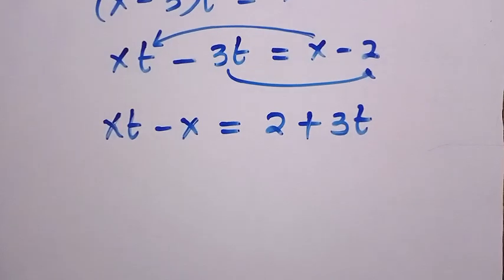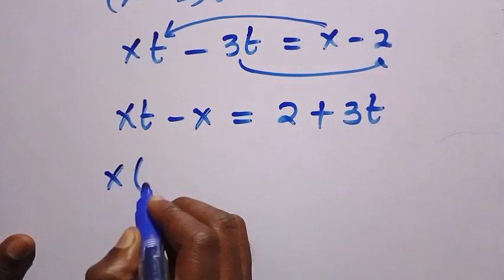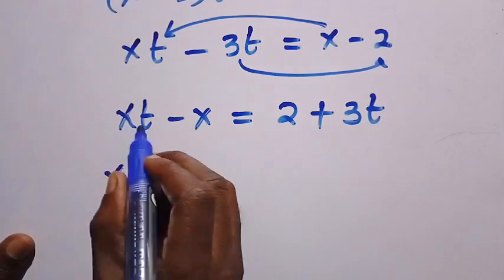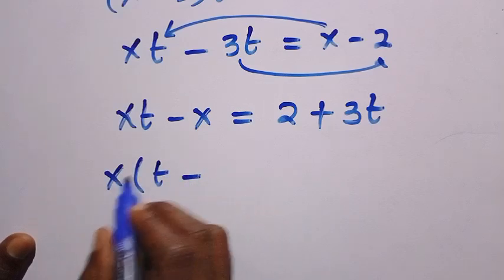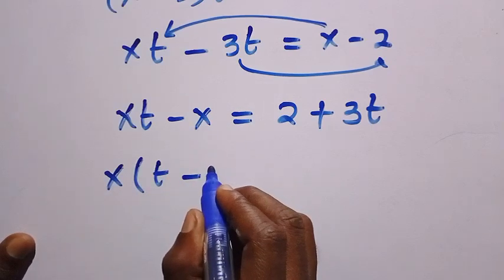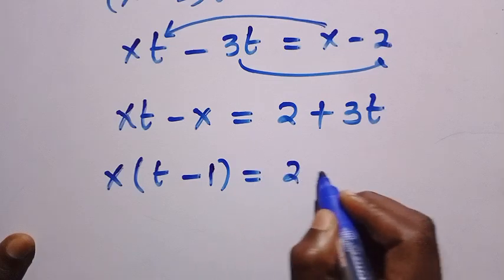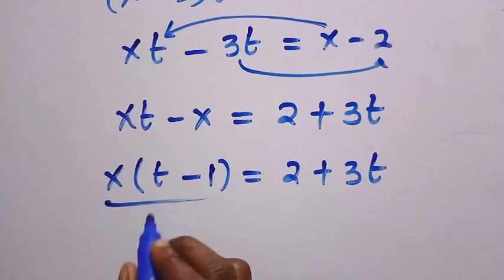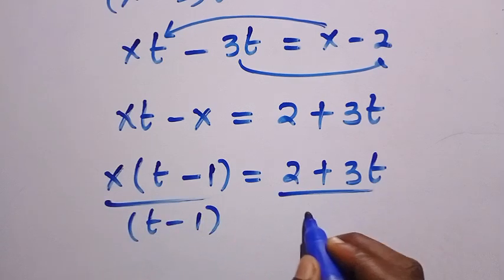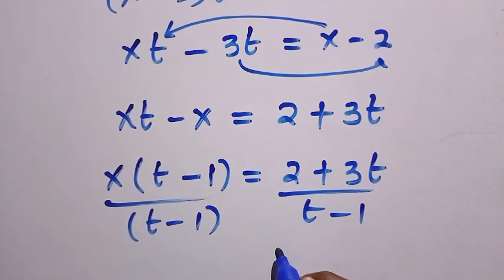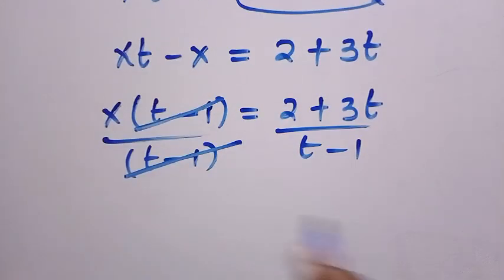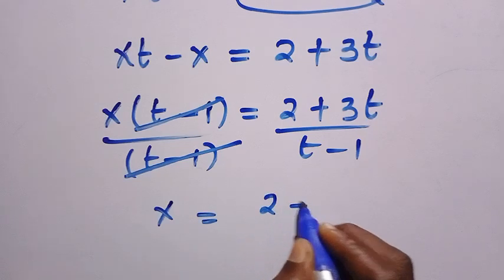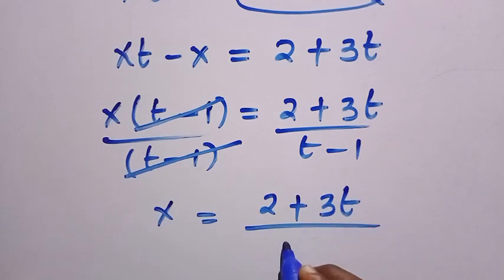Next, we take x out as a common factor. Dividing through by x we have x times (t minus 1) equals 2 plus 3t. Dividing both sides by t minus 1, we get x equals 2 plus 3t divided by t minus 1.